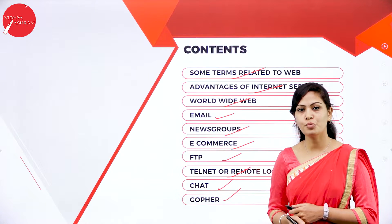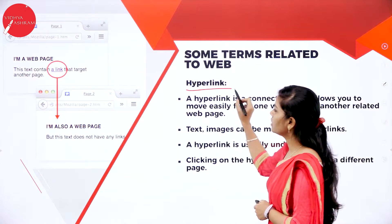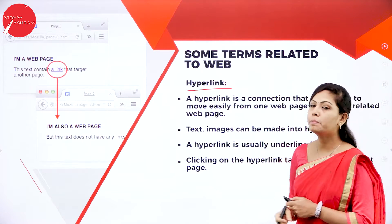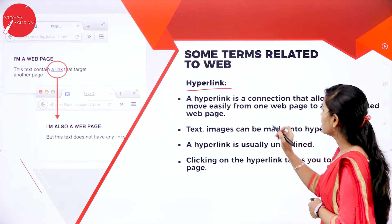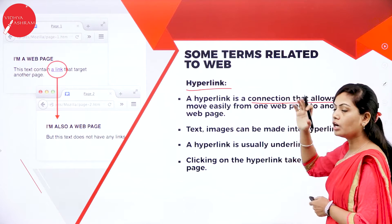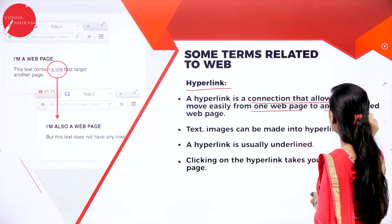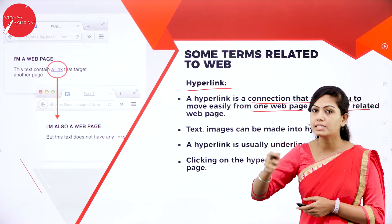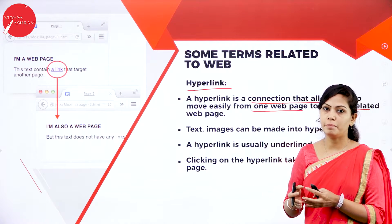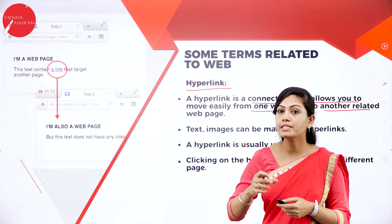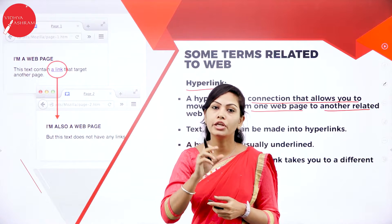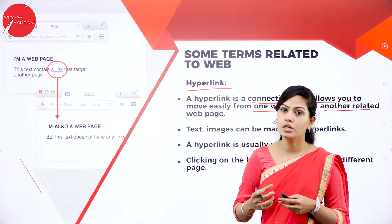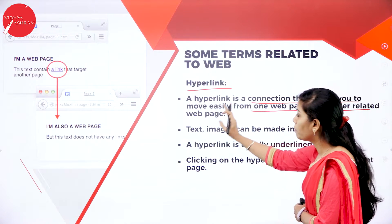Our first topic is hyperlink. Note that HTTP is different — this is hyperlink. A hyperlink is a connection that allows you to move easily from one web page to another related web page. A hyperlink is a word, phrase, or image that you can click to jump to a new document or a new section within the current document.